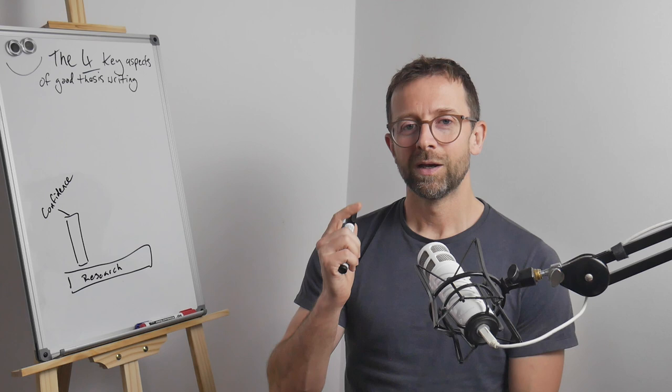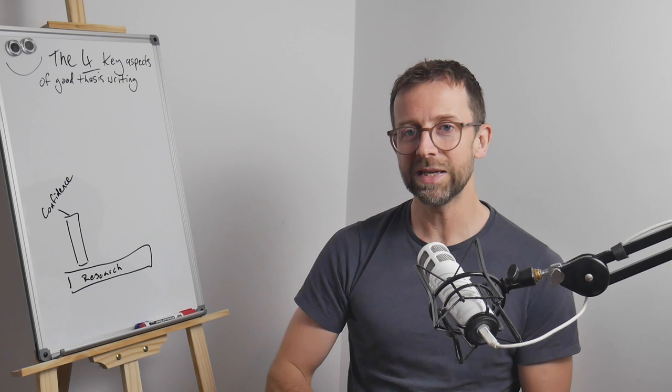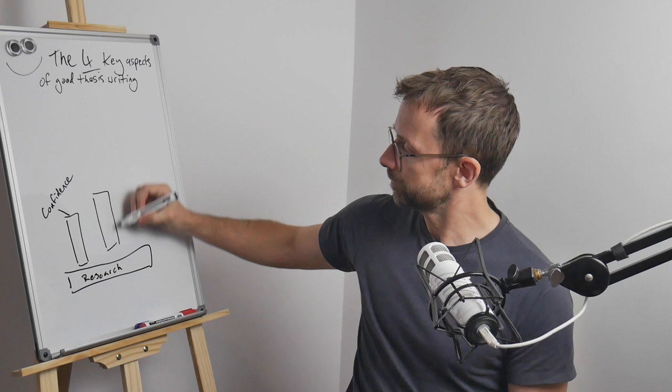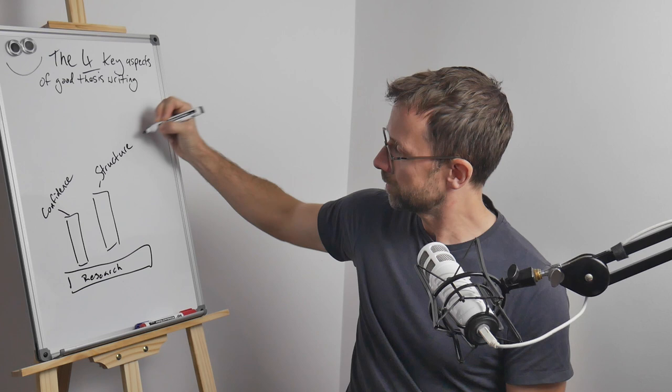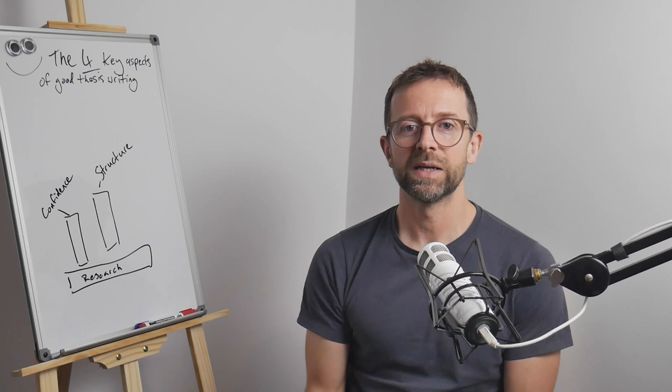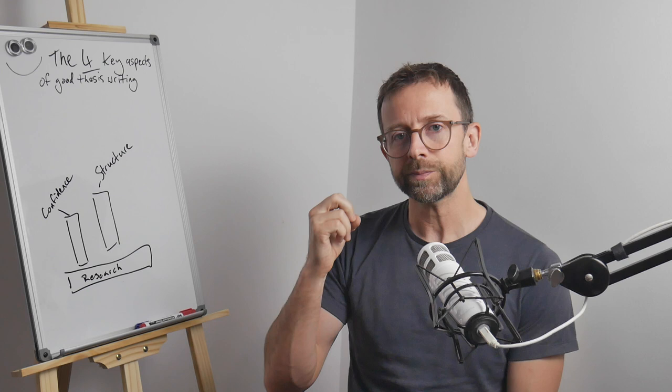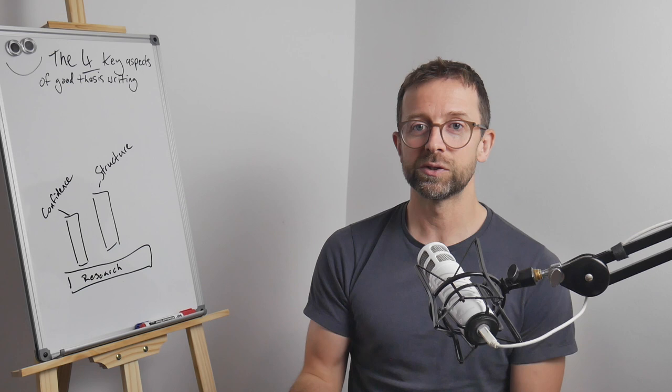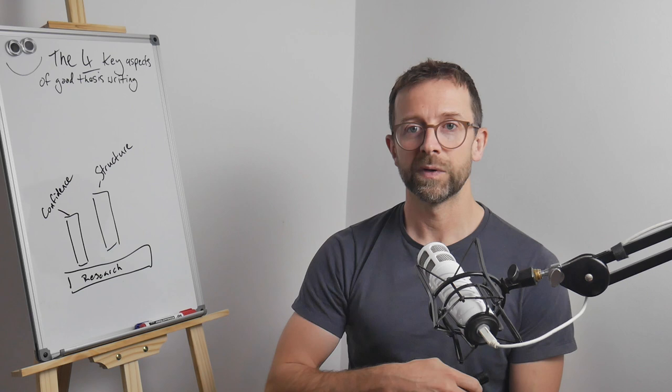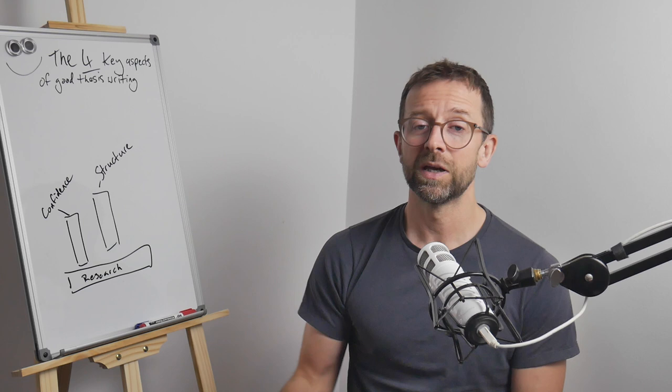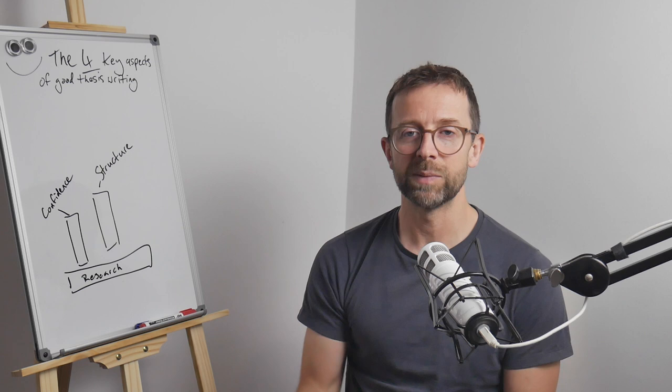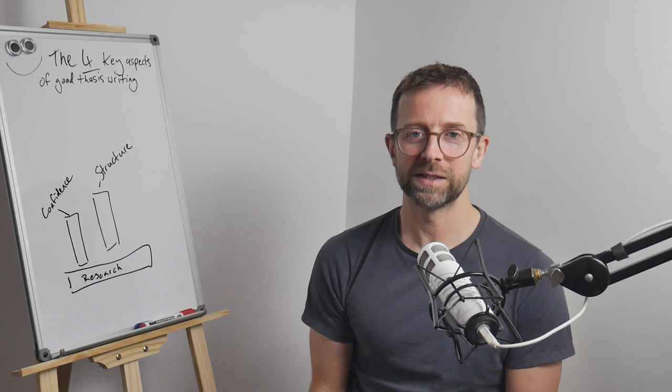The second key pillar of good PhD thesis writing is understanding structure. Another common difficulty in writing is knowing how to take the tangled mess of ideas and knowledge in your head and ordering them in a way that someone else can follow. But fortunately there are guiding principles that you can learn that can help you to create a coherent structure. These principles are universal, they can be applied to any research project from any academic field, and they're actually quite simple. They do take a little bit of time and practice to master, but once you get it, it can make a ridiculous difference to the quality of your writing.